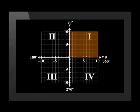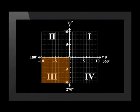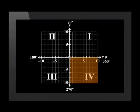Quadrant 1 is between 0 and 90 degrees. Quadrant 2 is between 90 and 180 degrees. Quadrant 3 is between 180 and 270 degrees. And Quadrant 4 is between 270 and 360 degrees.